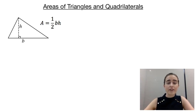In this video, I want to have a look at areas of triangles and quadrilaterals. So we'll start off with triangles. If we know the base and the perpendicular height of a triangle, then we can find the area by going half times the base times the height.